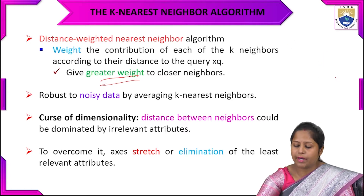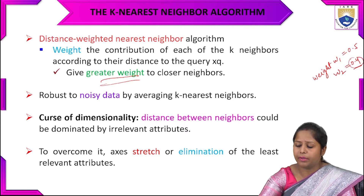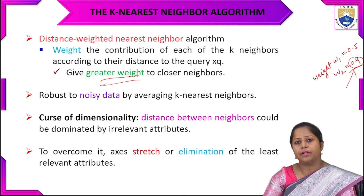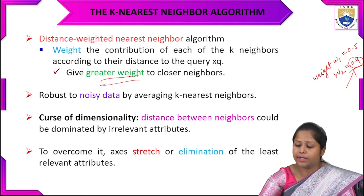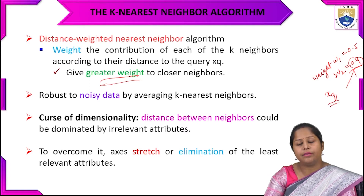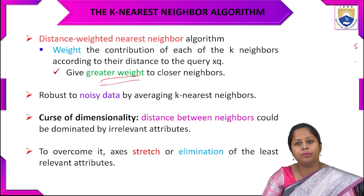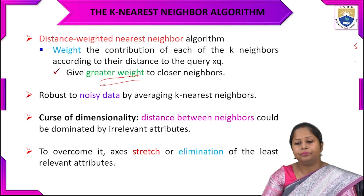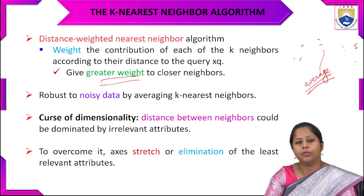We consider the greatest weight for that particular point as the closest neighbor. Sometimes there can be noisy data, and we remove that by averaging the K nearest neighbors — taking the average of all the neighboring points — to eliminate the noisy data.